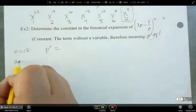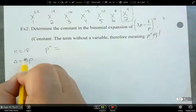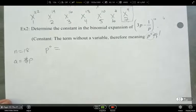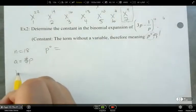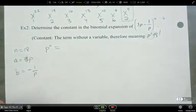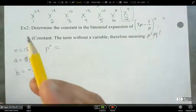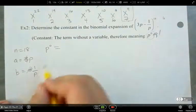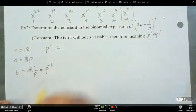Now, a is equal to 3p, but I'm not going to worry about the 3, because I'm just concerned about the exponent on the variable. And for b, it's negative 1 over p, but the only part I care about is the exponent. So I'm just going to look at the fact that this is p to the power of negative 1.